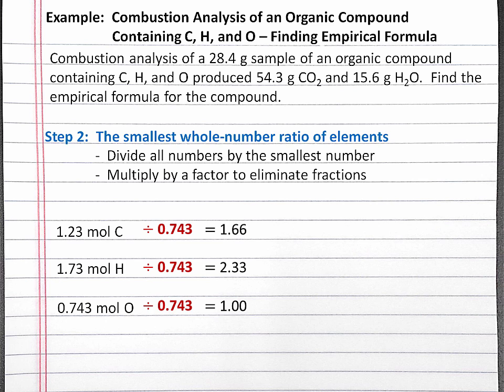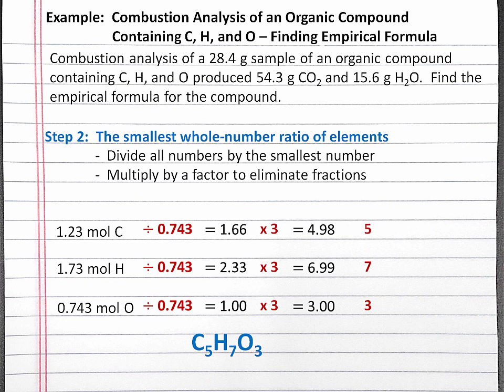So first, we'll divide all of our numbers by 0.743 and we'll get numbers 1 or greater. When we look at our molar ratios, there are fractions of 2/3 (0.66) and 1/3 (0.33). So to get rid of these fractions, we'll multiply all of our numbers by 3, and we'll end up with 5, 7, and 3. So our empirical formula is C5H7O3.